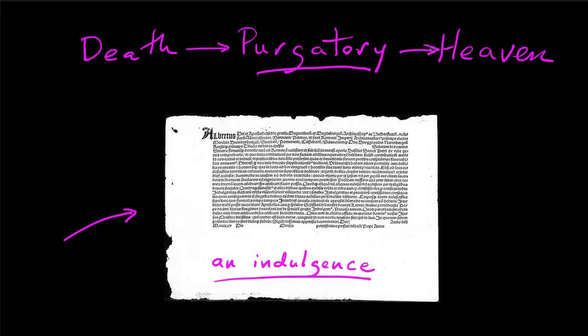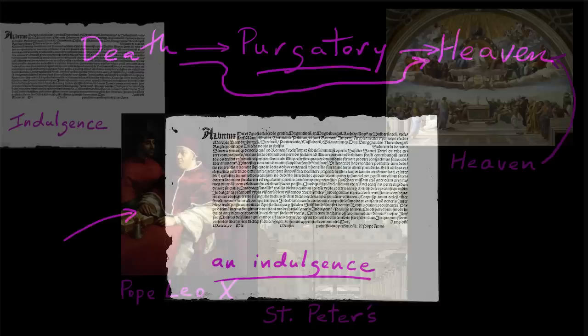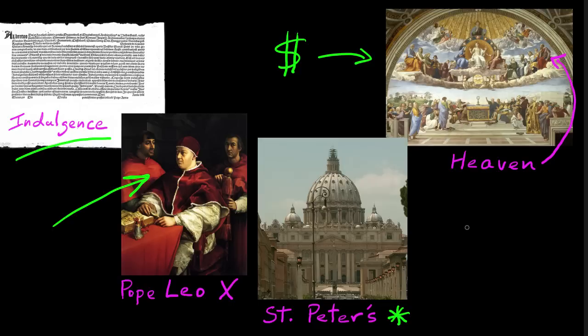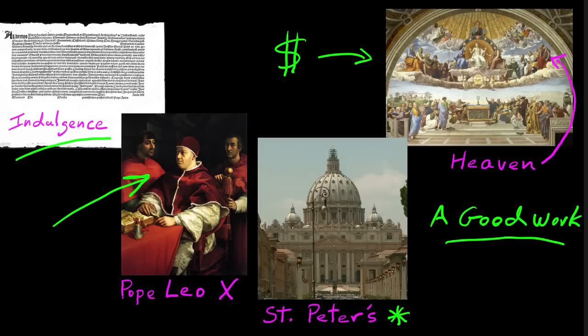Even in certain extraordinary cases, an indulgence might allow you to circumvent Purgatory entirely and go directly to heaven. The problems began not so much in the actual indulgences, but in the perception of the selling of indulgences. Leo X granted indulgences to his representatives to raise money for the building of St. Peter's, but this was misunderstood to mean that one could simply pay money and then gain access to heaven directly. That money was for the rebuilding of St. Peter's, so you were doing a good work — and according to the Catholic Church, doing a good work is one of the ways you can assist in gaining yourself a place in heaven.